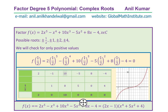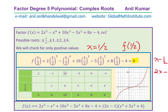Let's begin with the first one: x = ½. We substitute x = ½ into f(x) and calculate. We get f(½) = 0. That means x - ½ is a factor, or equivalently, 2x - 1 is one of the factors of the degree 5 polynomial.